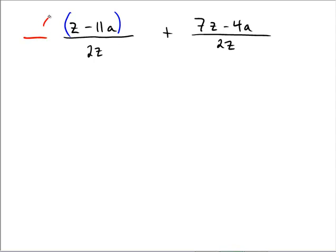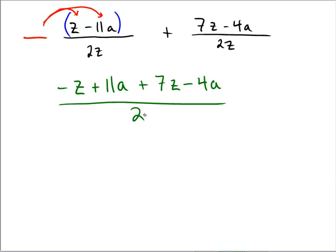Let's take the negative sign and distribute through so that we get negative z, minus a negative would be plus 11a. Then we're adding 7z and subtracting 4a. Since the two denominators are the same, this is all over 2z.